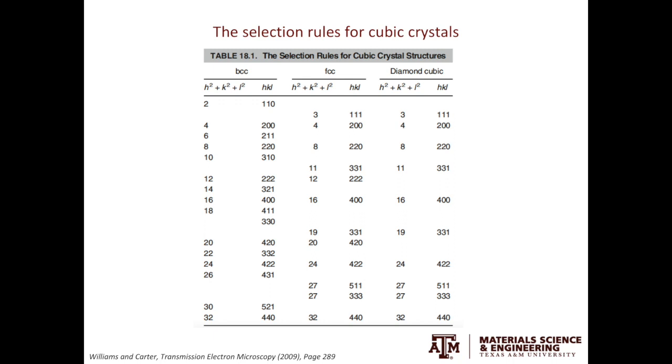From undergrad material science class, we also learned that the d spacing is a function of 1 over square root h square plus k square plus l square. In diffraction, since it's in the reciprocal space, we can predict the positions of those spots.